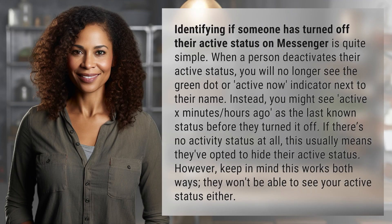Identifying if someone has turned off their active status on Messenger is quite simple. When a person deactivates their active status, you will no longer see the green dot or active now indicator next to their name. Instead, you might see 'active X minutes/hours ago' as the last known status before they turned it off. If there's no activity status at all, this usually means they've opted to hide their active status.